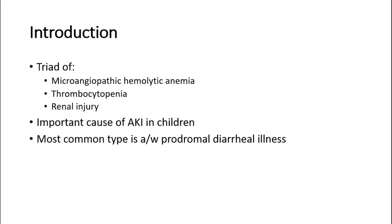Hemolytic uremic syndrome is a very important cause of acute kidney injury in children. It mostly occurs in children less than five years old, but it can also occur in older children. The most common type is associated with a prodromal diarrheal illness.